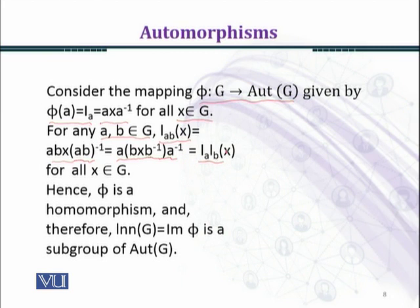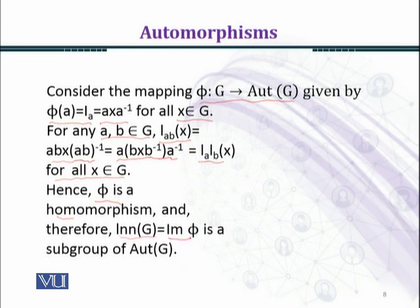So we can see that the homomorphism property is satisfied for all x belonging to G. Hence, φ is a homomorphism, and therefore Inn(G), the image of φ, is a subgroup of Aut(G).